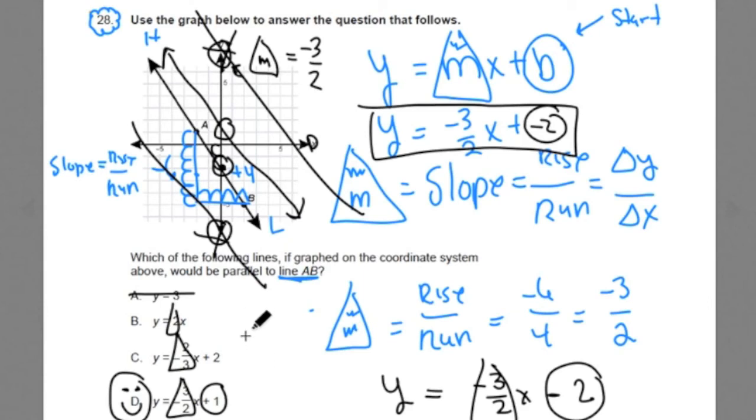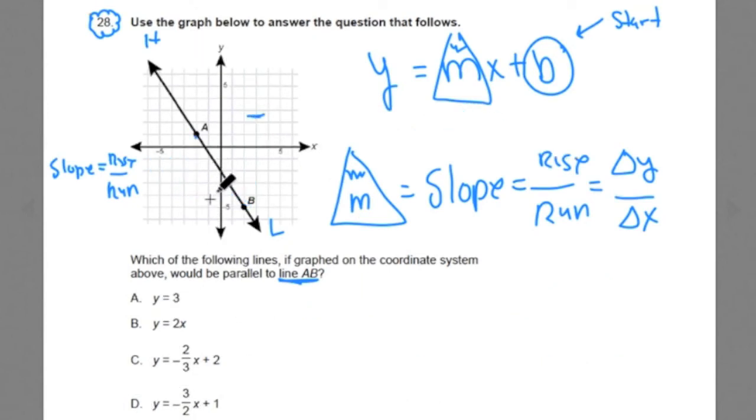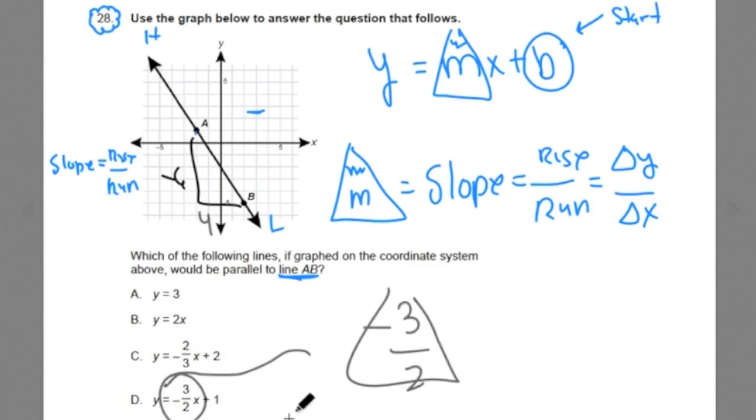So essentially in this problem right here, if you're looking for a line that's parallel, that's your mission is to find a line that's parallel. Then first you find out the slope of this, negative 3 over 4, and get to the 3 over 2 as your slope, and then match it up with the one that has the same slope. And you'll find the parallel line every time.